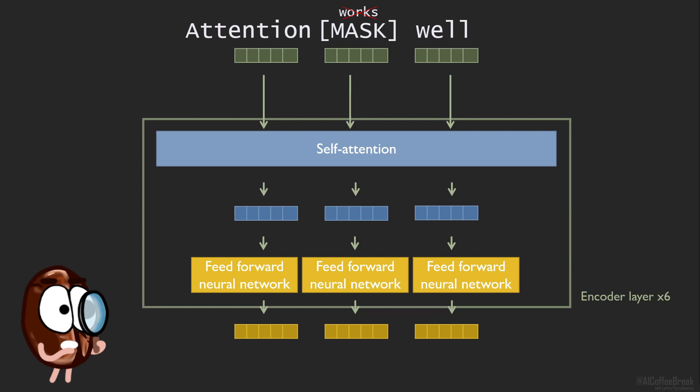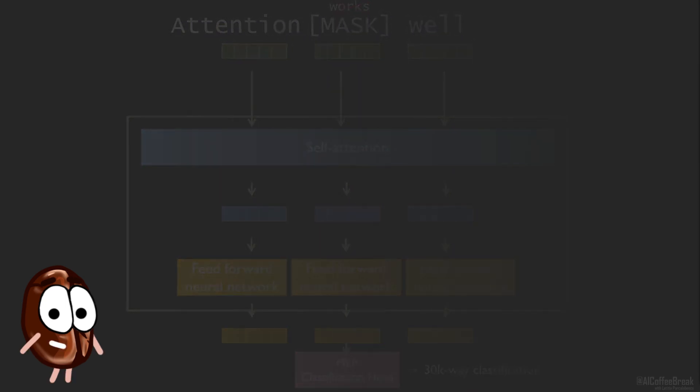By classifying which of all 30,000 or more tokens in the English vocabulary could have been the right word instead of the masked token. And we would like to do this autoencoding also for visual data.